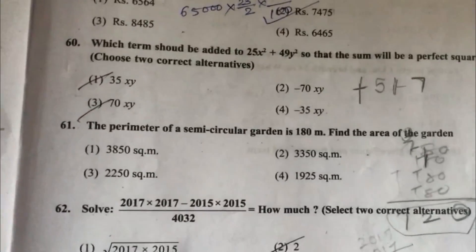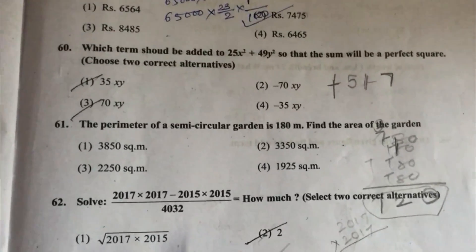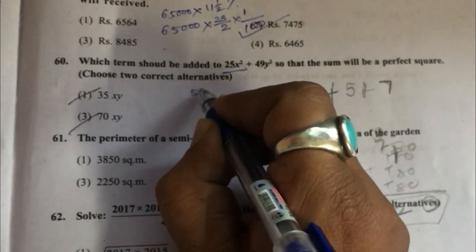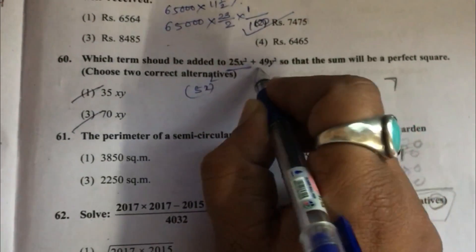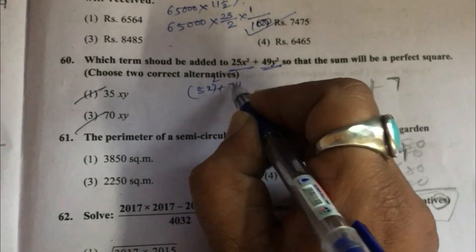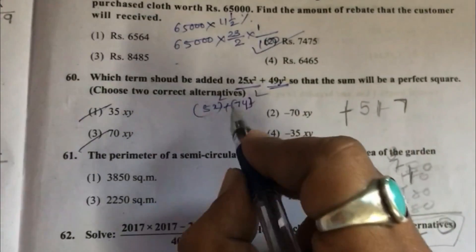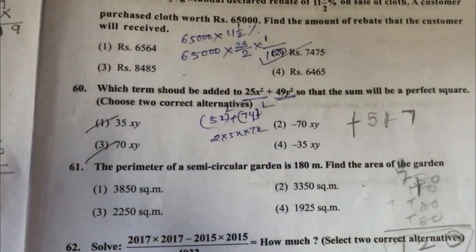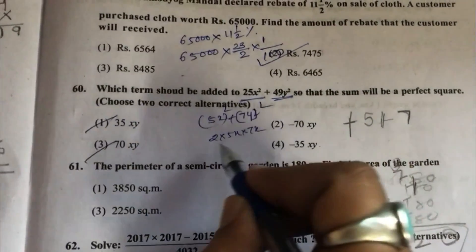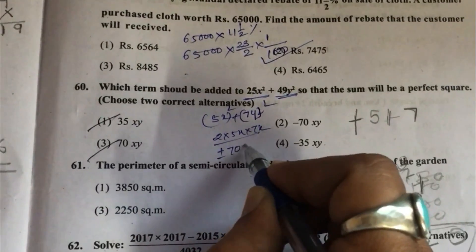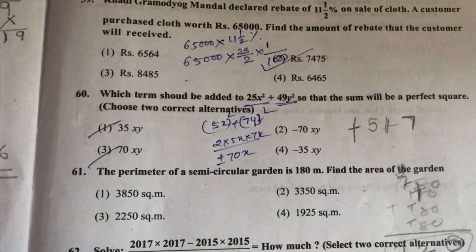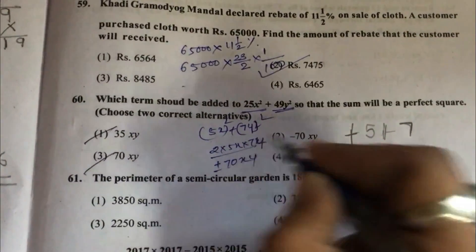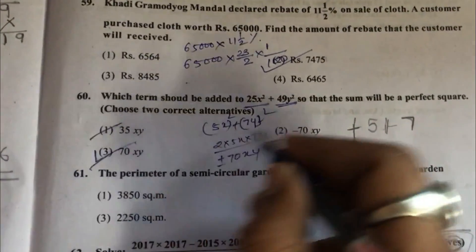Question 60: Which term should be added to 25x square plus 49y square so that the sum will be a perfect square? 25x square is 5x whole square. 49y square is 7y whole square. So we have to add 2 into 5x into 7y, plus or minus 70xy. So option 3 and 2.